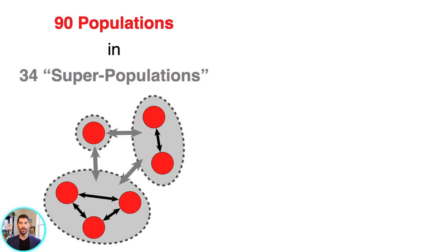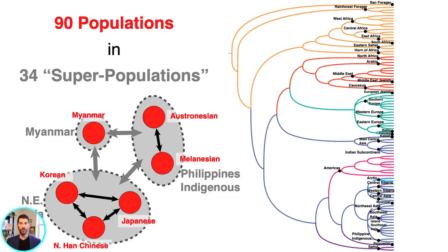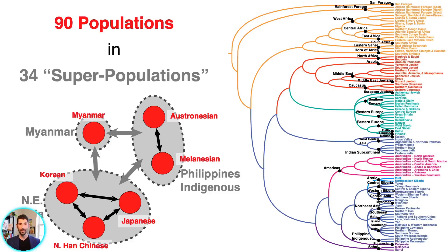We organize our 90 populations into 34 super populations, or parent groups. For example, here we have three super populations: Myanmar, Philippines Indigenous, and Northeast Asia. Inside each super population are one or more populations — in Philippines Indigenous you have Austronesian and Melanesian; in Northeast Asia you have Korean, Japanese, and North Han Chinese; and Myanmar is its own singular super population. We can represent all 34 super populations as a sort of phylogeny, but there's a major caveat: no phylogeny can really represent human history, since phylogenies are by definition simple bifurcating trees. Human history is much more complicated due to ancestral mixing, so this tree is only an approximation for classification purposes.